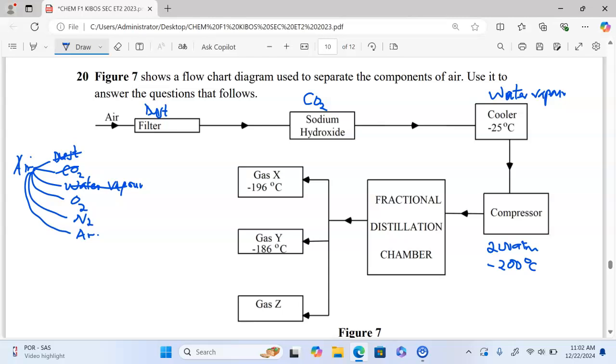During fractional distillation, nitrogen with the lowest boiling point of negative 196 degrees Celsius distills out first as the first fraction, followed by argon at negative 186 degrees Celsius, and lastly oxygen at negative 183 degrees Celsius.